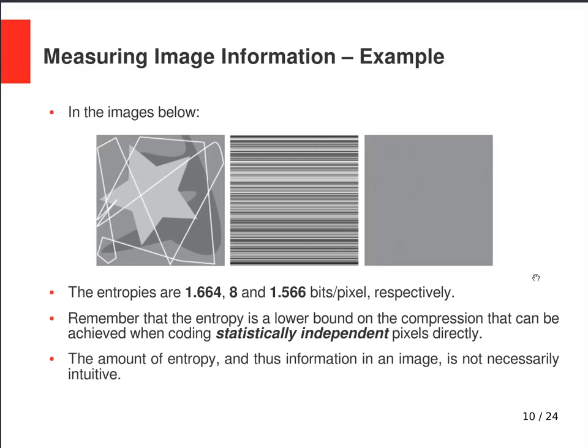The entropy is a lower bound on compression achievable when coding statistically independent pixels directly. In practice, images have spatial and temporal correlations between pixels that the general entropy definition does not account for. Nevertheless, entropy and the amount of information in an image are correlated with each other, even if this correlation may not always be intuitive.